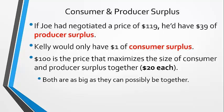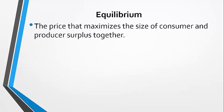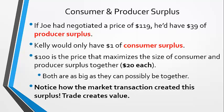Both surpluses are as big as they can possibly be together, which is one definition of equilibrium — it's the price that maximizes the sizes of your consumer and producer surpluses. Notice how this voluntary market transaction created this surplus. That illustrates how trade creates value and makes both parties better off.